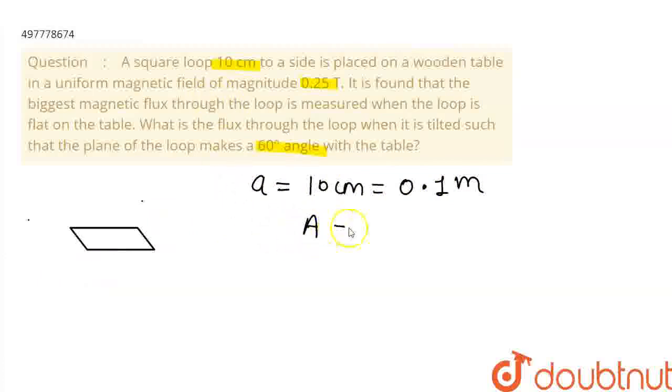Now, what is the area? Area equals side squared: 0.1 into 0.1. This will be 0.01 meter square.